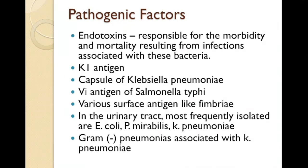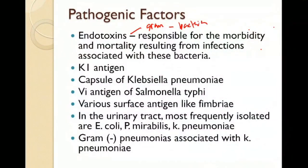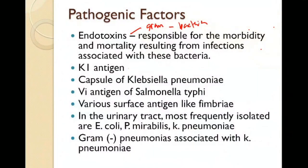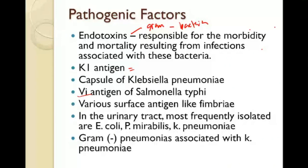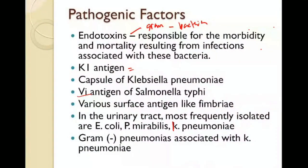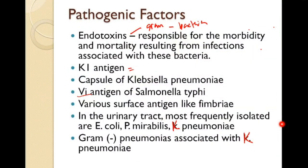Other pathogenic factors include endotoxins, which are mostly found in gram-negative bacteria and are responsible for morbidity and mortality. The K1 antigen is from the capsule of E. coli; the capsule of Klebsiella pneumoniae is also a pathogenic factor. The Vi antigen is part of Salmonella typhi. Various surface antigens like fimbriae are also found. In urinary tract infections, the most frequently isolated are E. coli, Proteus mirabilis, and Klebsiella pneumoniae.